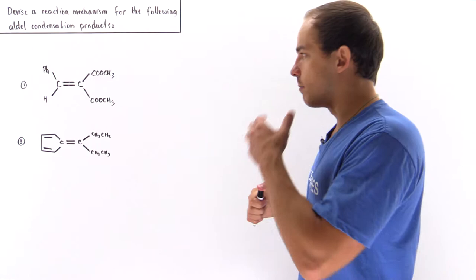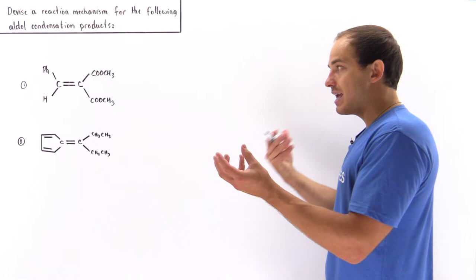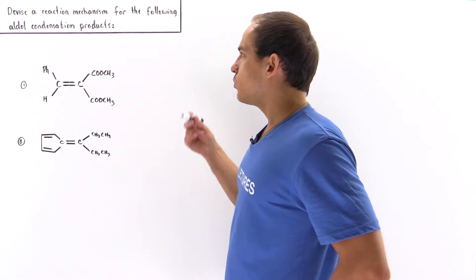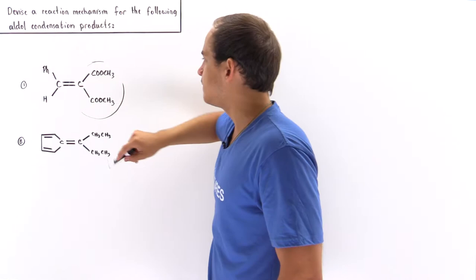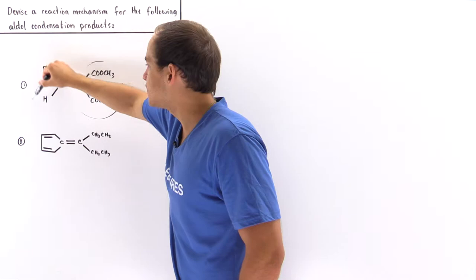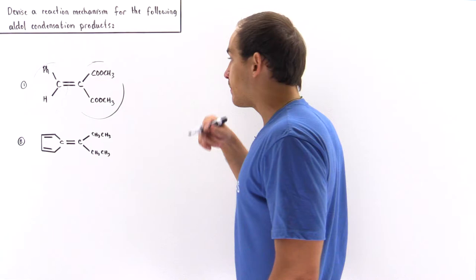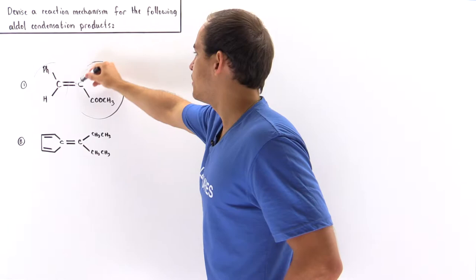Let's begin with molecule number one. We want to react some reactants together to produce our product as shown. Following the aldol condensation followed by the dehydration reaction mechanism, this side of the molecule will act as our carbonyl nucleophile, attaching to the simple aldehyde on the other side. So let's begin by producing that nucleophilic ion.